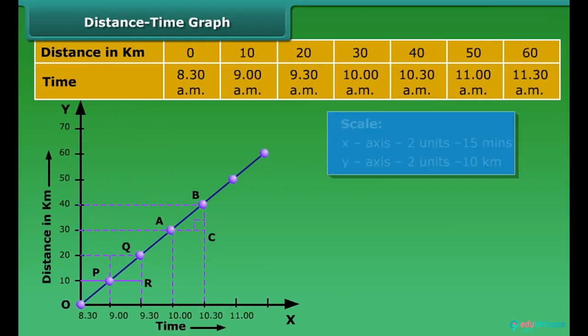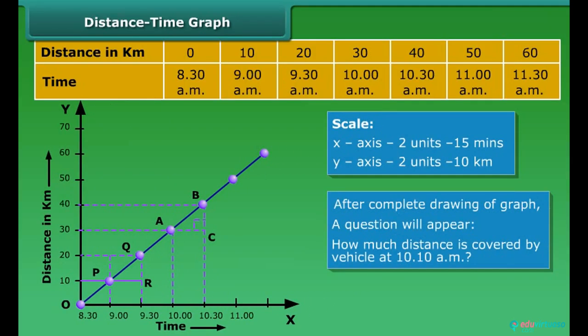Now plot the points on the graph paper, each point representing a specific combination of distance and time values. Join all the points on the graph to get a linear distance-time graph, which shows that the vehicle is moving at a constant speed. From this graph, we can calculate the distance covered by vehicle at a particular moment.